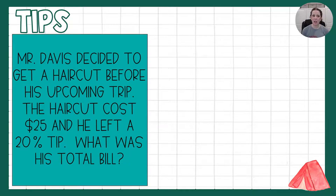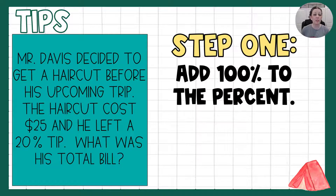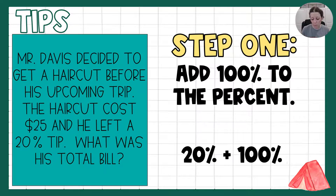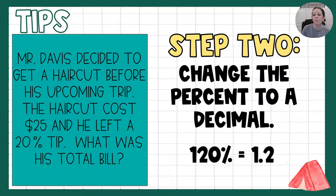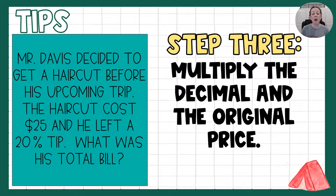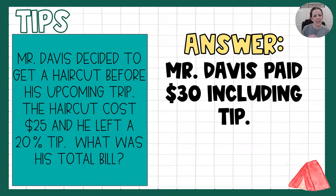Our next problem: Mr. Davis got a haircut before his upcoming trip. The haircut cost $25 and he left a 20% tip. What was his total bill? I'll use the second strategy here. Step one: add 100% to the tip percentage — he's paying 100% of the $25 haircut plus 20%, so 120% total. Step two: convert 120% to a decimal — 1.2. Step three: multiply 1.2 by $25, which means Mr. Davis paid $30 for his haircut including the tip.